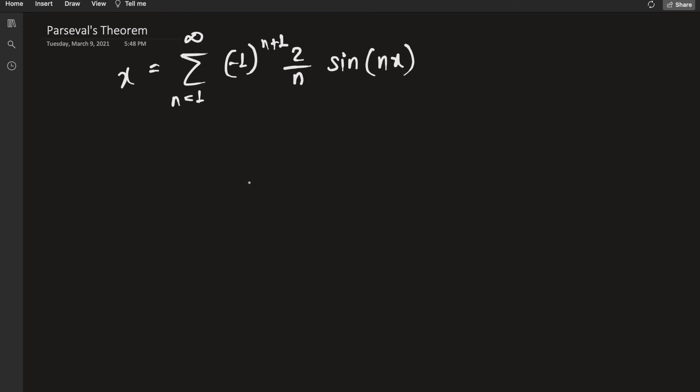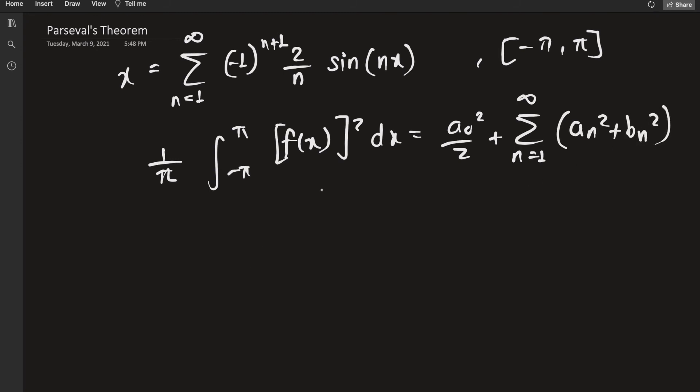Okay, having obtained the Fourier series expansion, Parseval's theorem goes like this. On a Fourier series expansion of negative π to π, Parseval's theorem states: 1 over π times integral from negative π to π of f(x) the whole thing squared dx is simply equal to a₀ squared over 2 plus sum from n equals 1 to infinity of aₙ squared plus bₙ squared.